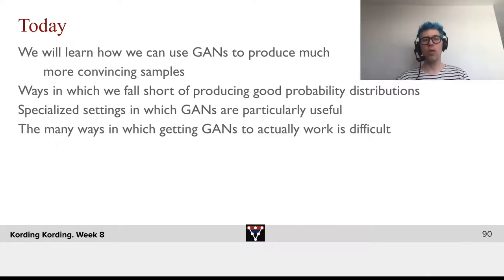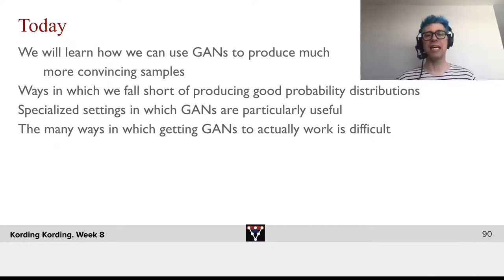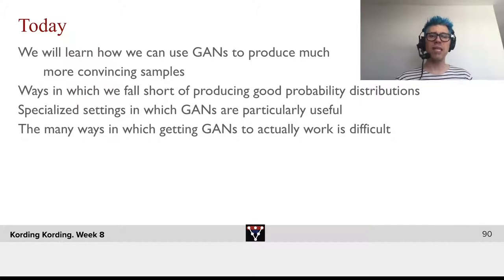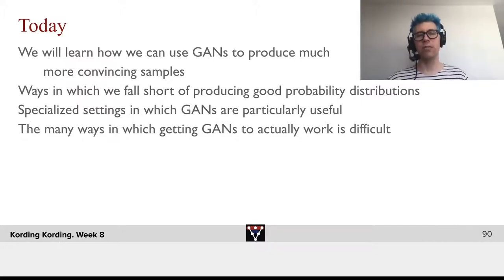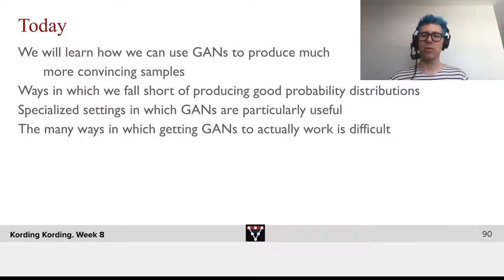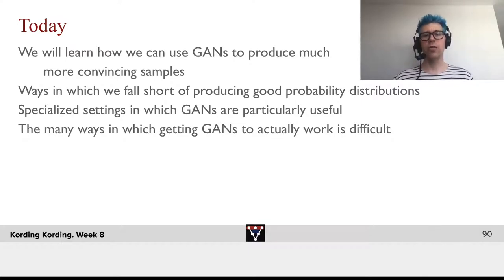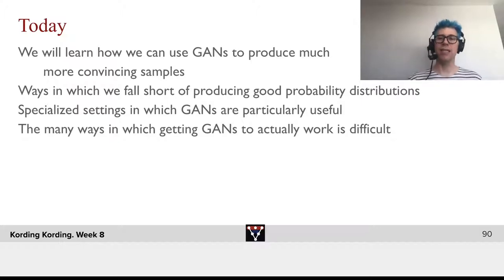Today, we will learn how we can use generative adversarial networks, GANs, to produce much more convincing examples when it comes to images. We will talk about ways in which we fall short of producing good probability distributions, specialized settings in which GANs are particularly useful, and the many ways that are needed to get GANs to actually work, and why that is generally difficult.